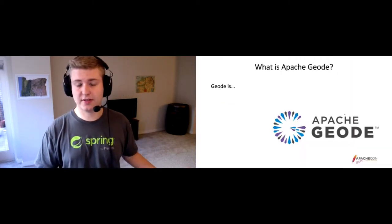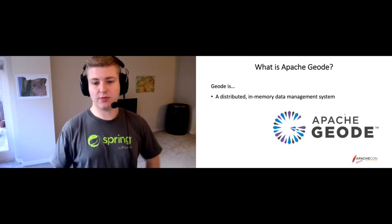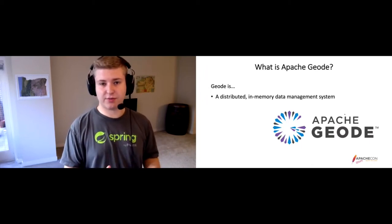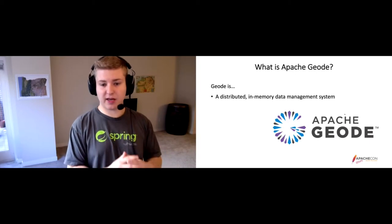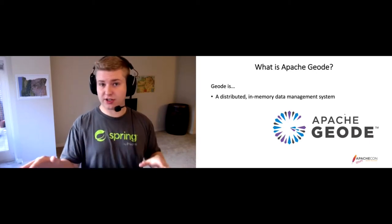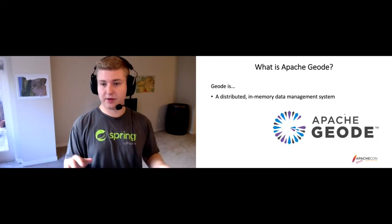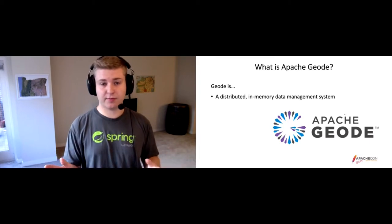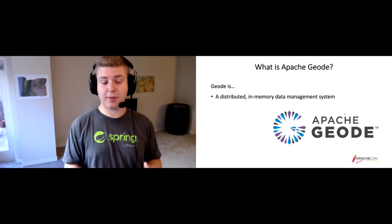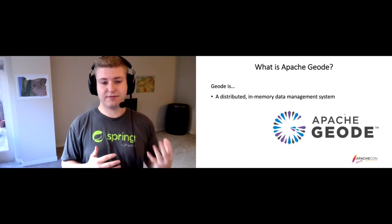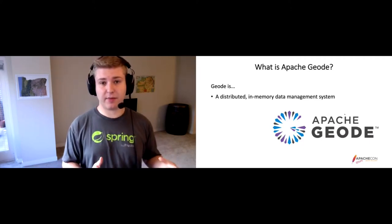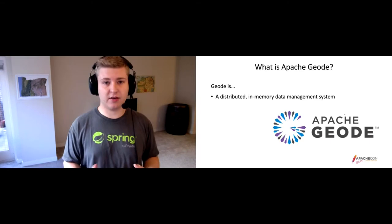Let's start with the basics. What is Apache Geode? Geode is a distributed in-memory data management system — distributed in the sense that Geode is comprised of multiple data servers that work together to make up a cluster. You can partition your data across the servers so that your data set is split up, or you could replicate your data and have multiple redundant sets on multiple servers, or configure for both. And it's in-memory, so unlike a traditional relational SQL database that stores things mostly on disk, Geode primarily stores things in memory, mostly for speed's sake, though it can also be configured to store things on disk if you need your data to be more permanent.